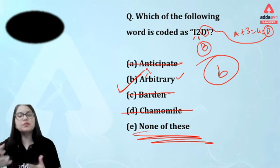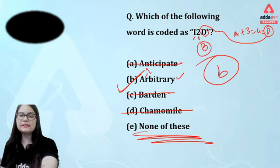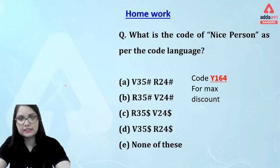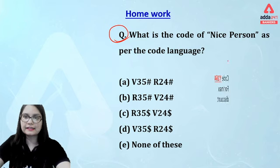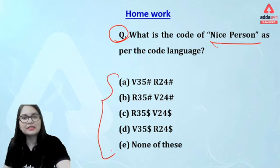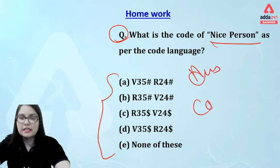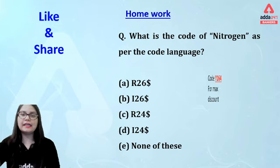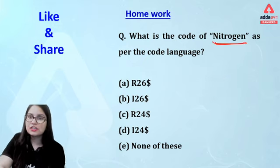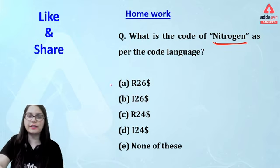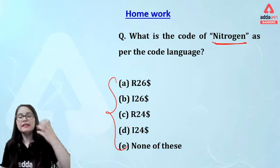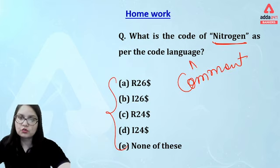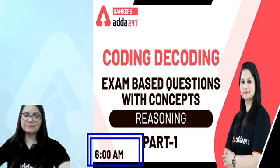I hope you all can observe the sequence and identify the answers. I'm providing you a homework question: observe this sequence and answer — what is the code for 'nice person' from the given options? Please comment your answer in the comment section. Also, identify which option gives the code for 'nitrogen' — just observe and let me know in the comments below.